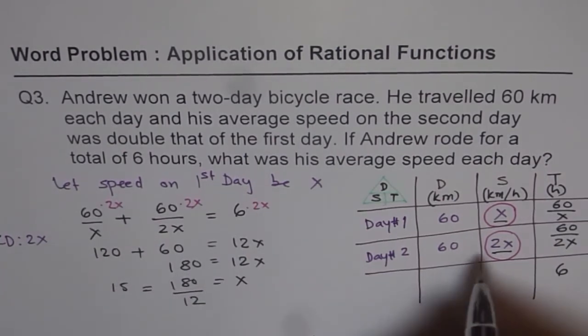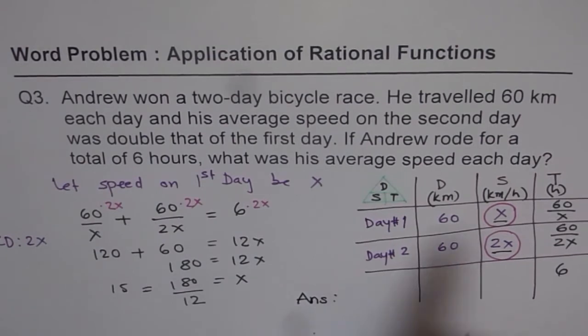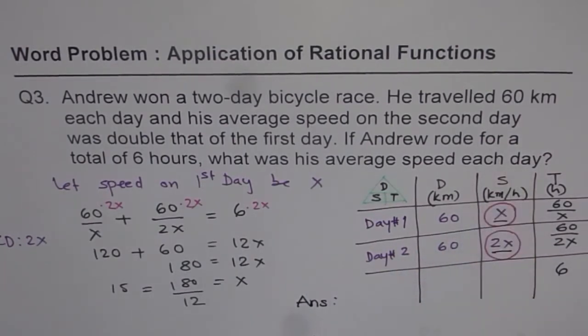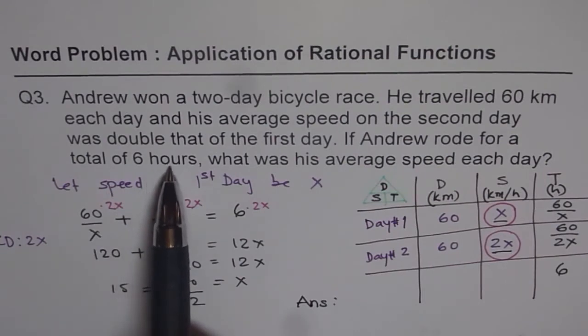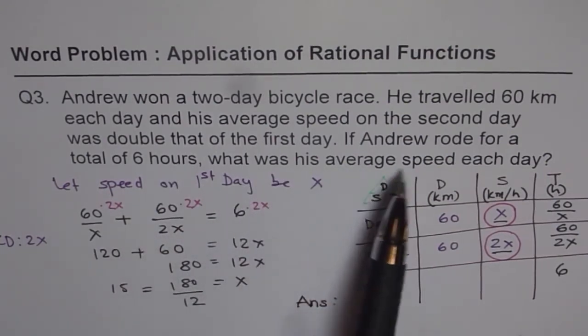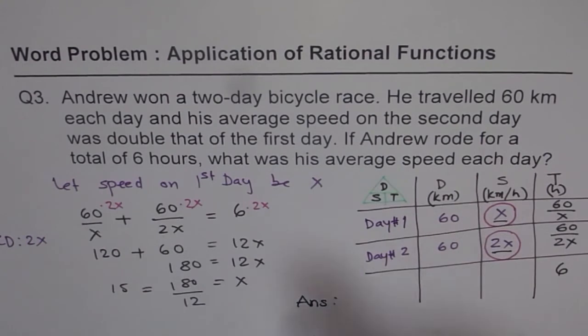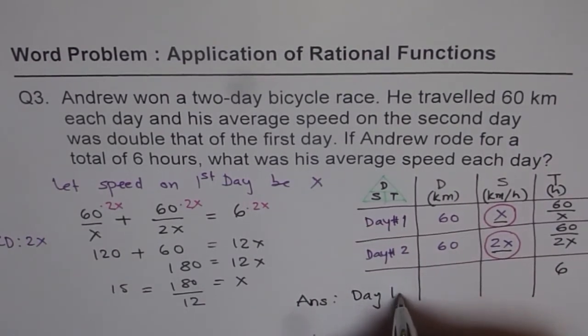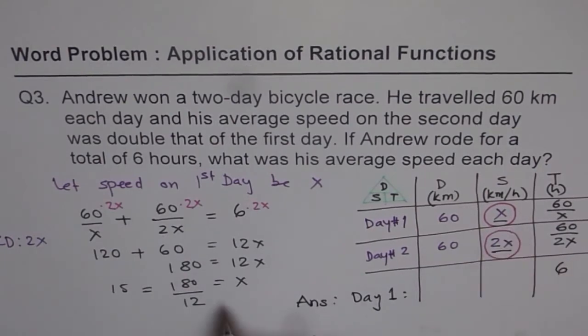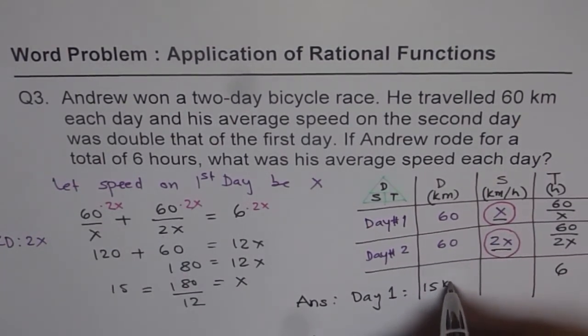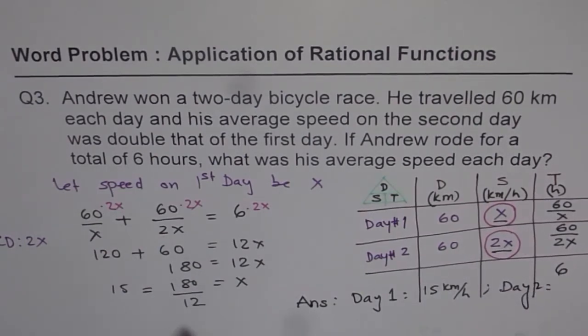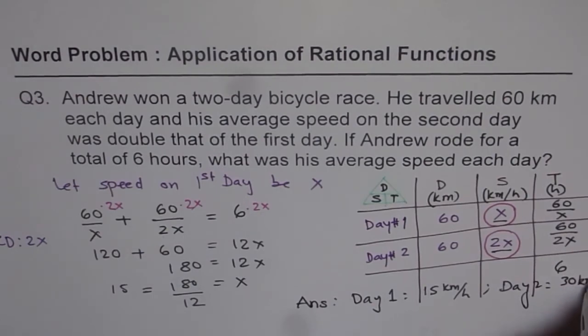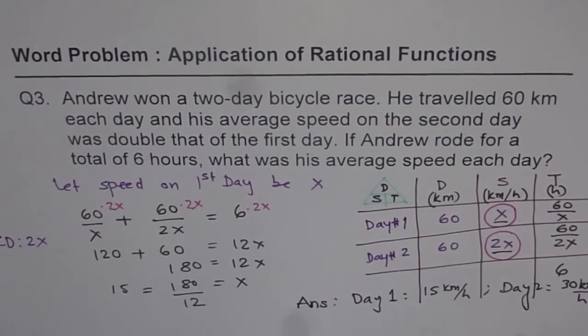Remember, what answer do you have to write? Read the last statement. Normally the last and second last statements help you find the equation and what to answer. If Andrew rode for a total of 6 hours, that is the equation. What was his average speed each day? So we say day 1 speed is x, which is 15 kilometers per hour. And on day 2, the speed is twice: 30 kilometers per hour. That is how you complete the question.